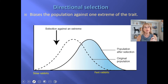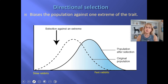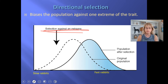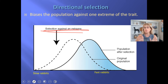Let's look at some examples that might be on your lab quiz. Directional selection — if there is selection against an extreme, so if being a slow rabbit is definitely bad, then rabbits will keep getting faster and faster. That is directional selection.